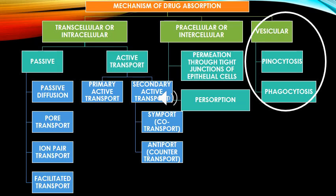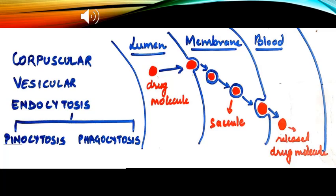Vesicular transport, also called endocytosis or corpuscular transport, is a type of transport in which the drug does not have to be in an aqueous solution. It involves the formation of a vesicle. The drug molecule gets engulfed in a vesicle, which transfers it from the lumen to the blood via the membrane. It is of two types: pinocytosis, when the engulfed solute is a fluid or liquid, and phagocytosis, when it is a solid solute.